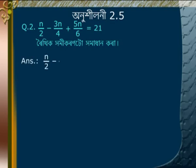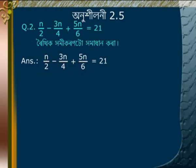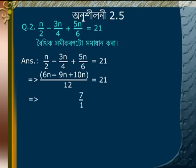First, take the LCM of 2, 4, and 6. The LCM is 12. Simplifying: 7n is equal to 12 multiplied by 21.